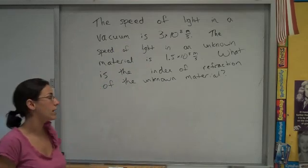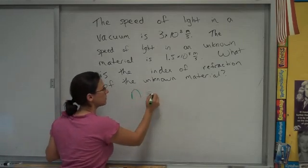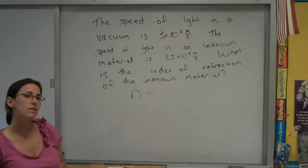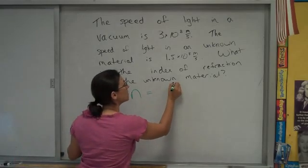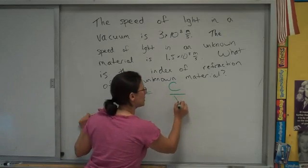We're looking for index of refraction. The symbol for that is N. What it is, is it's the ratio of how fast light goes in a vacuum to how fast it goes in a material.